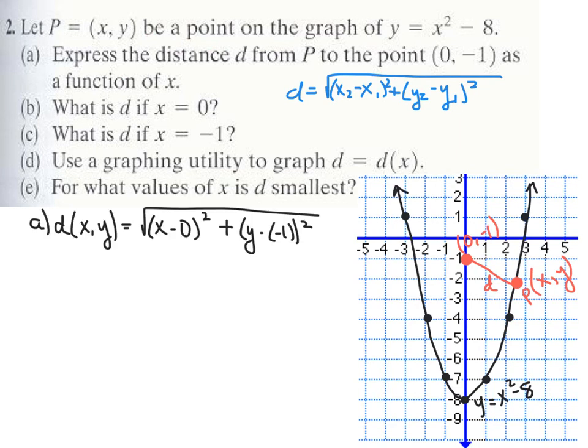We have two points — (x, y) and (0, -1) — and we want the distance between them. Using the distance formula: the square root of (x minus 0) quantity squared, plus (y minus negative 1) quantity squared. But the question wants it as a function of x, meaning we don't want y in the expression. We need to replace y with something in terms of x.